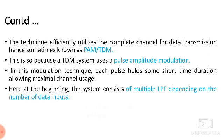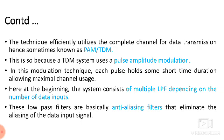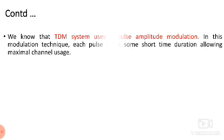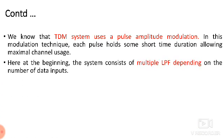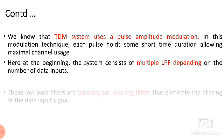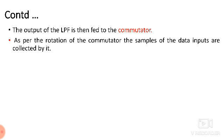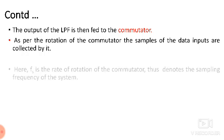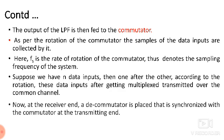In the TDM system, low pass filters — basically anti-aliasing filters — are used to separate signals. TDM uses pulse amplitude modulation (PAM) techniques. The system consists of multiple low pass filters depending on the number of data inputs. The basic concept uses n number of signals via a switch called a commutator, which rotates and selects signals for various time slots.